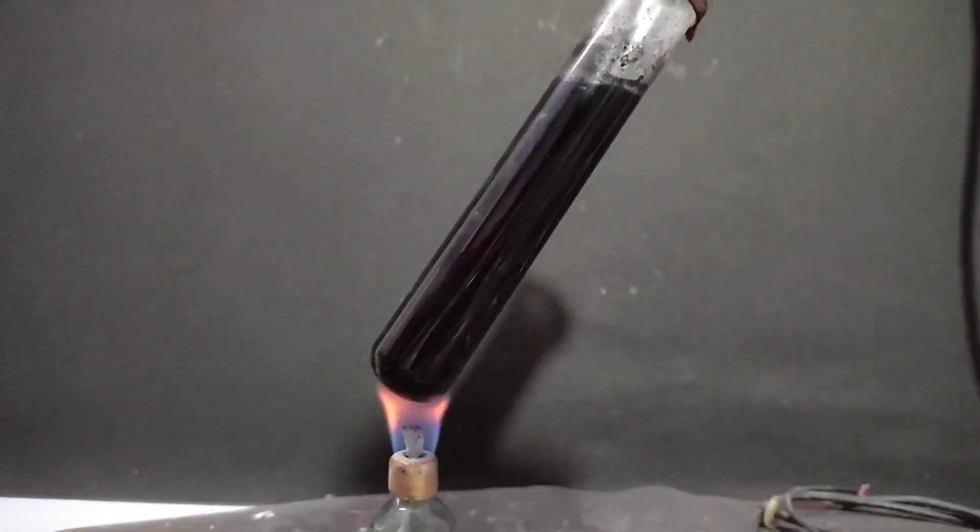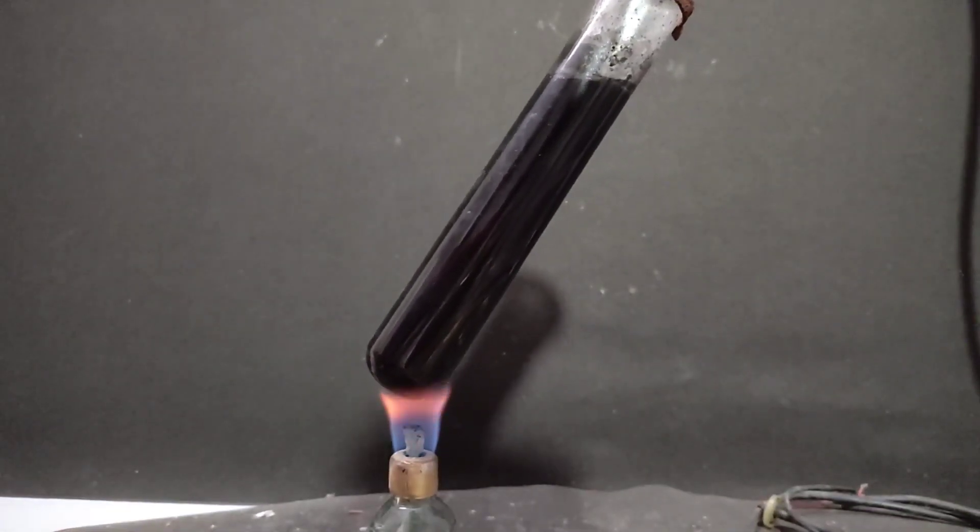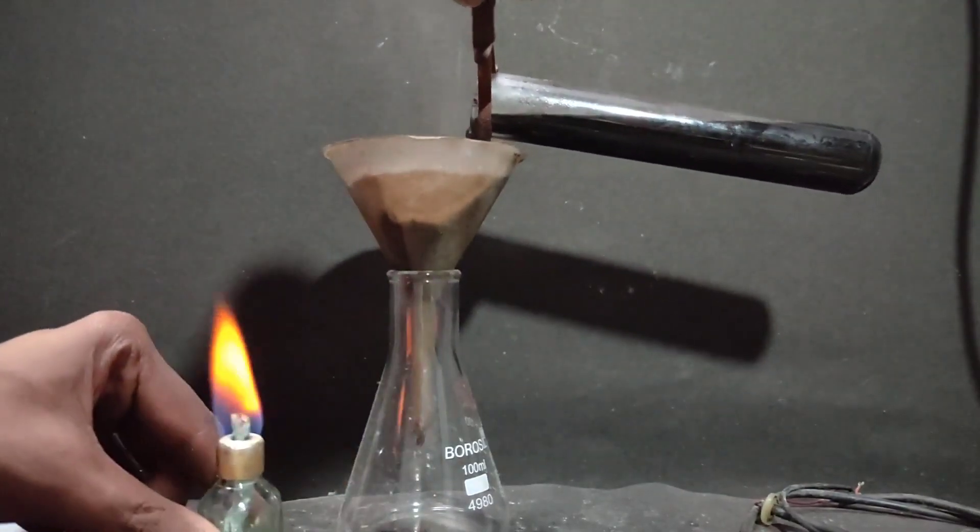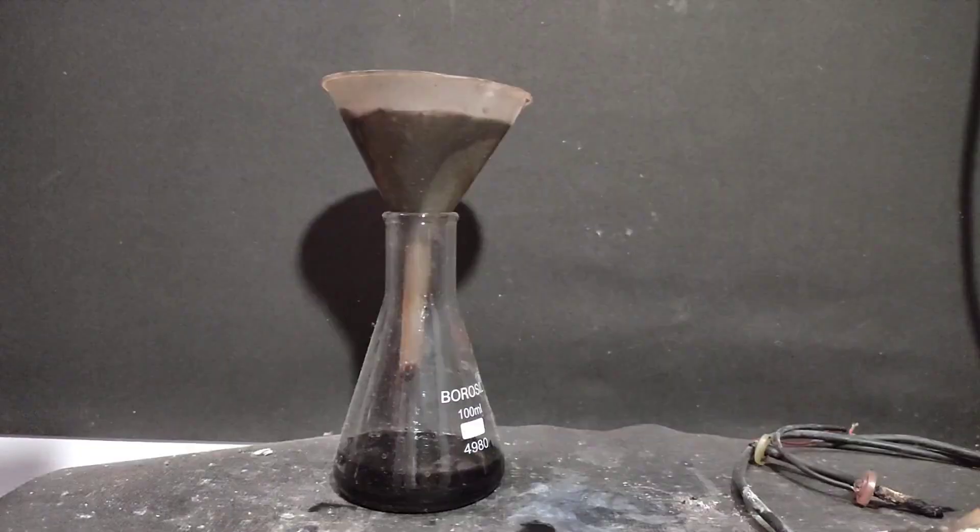After transferring everything into it, I heated it to boiling and filtered it hot to remove the carbon particles. On boiling, the solubility of potassium iodate increases, so it's important to filter it hot.